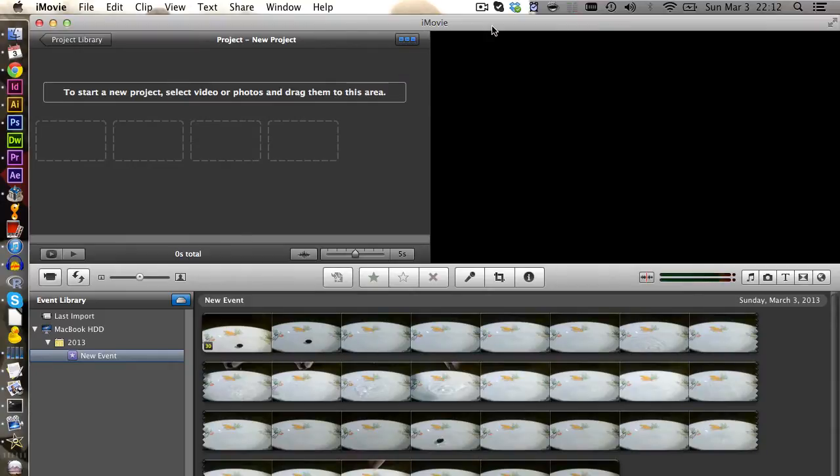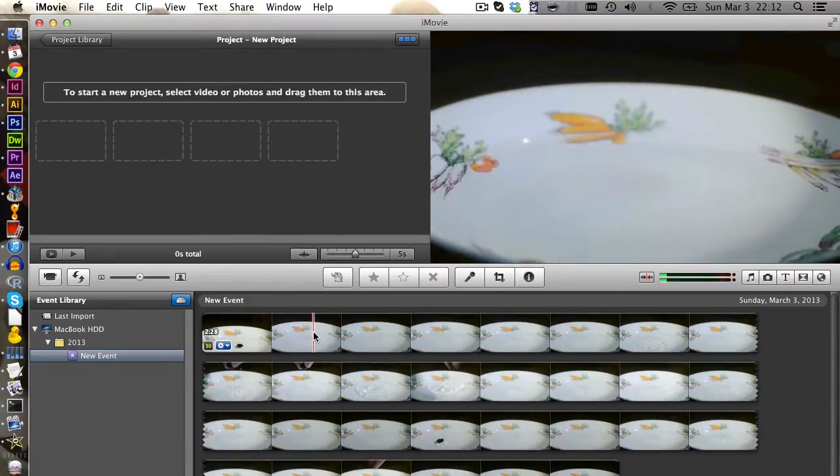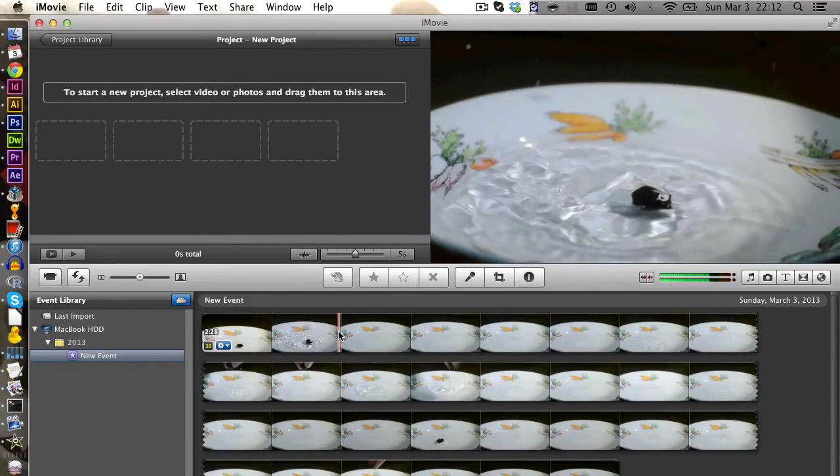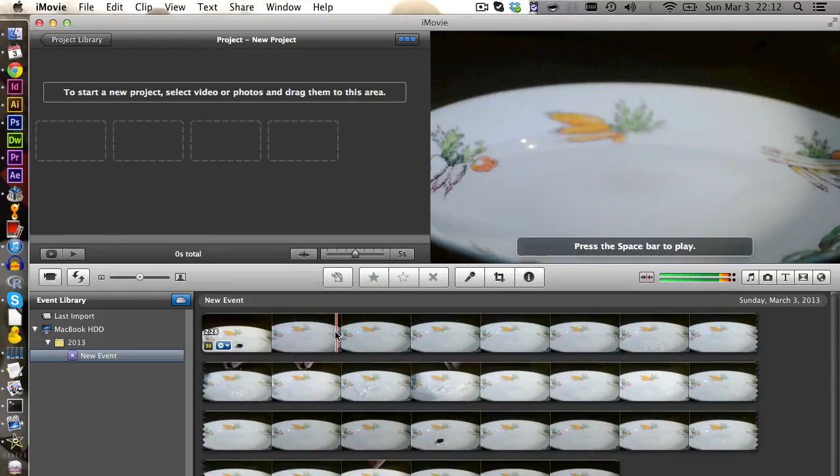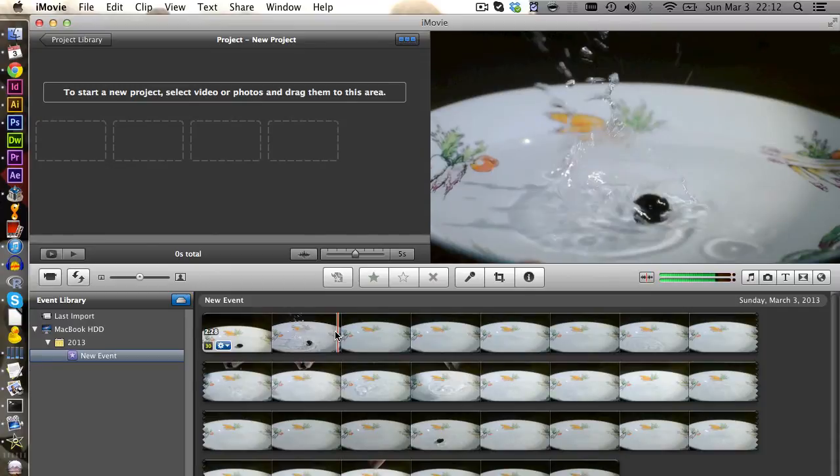Now it is done processing and we have here our footage. We can now scrub through the footage and find an interesting spot, for example this one. And if we now use our arrow keys we can go to this footage frame by frame. So we press to the right and we can take a look what happens when the marble drops into the water.